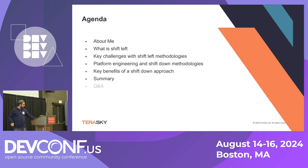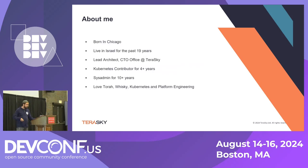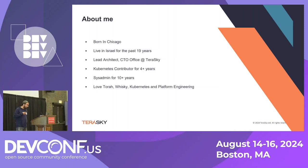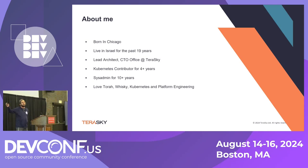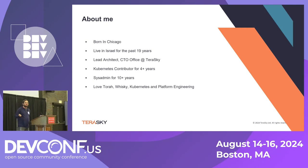A bit about myself first. My name's Scott. I'm from Chicago, and I've been living in Israel for the last 19 years — as of this evening, it will be 20 years exactly. I'm the lead architect at the CTO office at TerraSky, a solutions integrator. I've been working in the Kubernetes world — started as a sysadmin from virtualization — for about five years. My interests in life are religious studies, whiskey, and Kubernetes and platform engineering, exactly in that order.